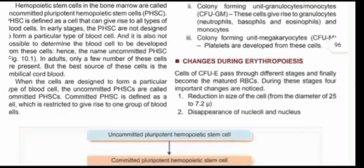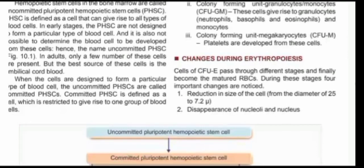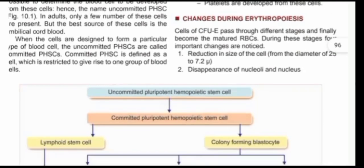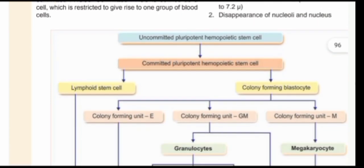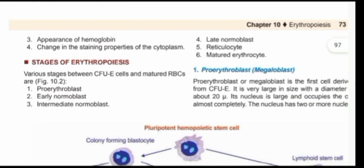What are the various changes during the process of erythropoiesis? You have a reduction in size — as you proceed, there is a gradual reduction in size of the RBCs. Then there is disappearance of the nucleoli and nucleus, because the mature red blood cell has no nucleus. Then disappearance of hemoglobin fully occurs at the intermediate normoblast stage. There is also a change in the staining properties of the cytoplasm — from blue, you get red.